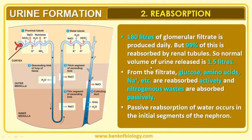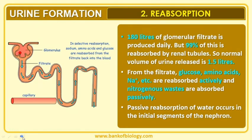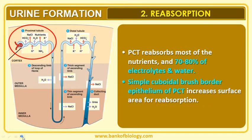What things are reabsorbed? Vital elements like glucose, amino acids, sodium, etc., are all reabsorbed. If these were lost from the body system, life severity beyond 3 days cannot be imagined. So all vital elements get reabsorbed. Passive reabsorption of water also occurs in the initial segments of the nephron. In the diagram, you can see reabsorption of glucose, amino acids, sodium, etc.